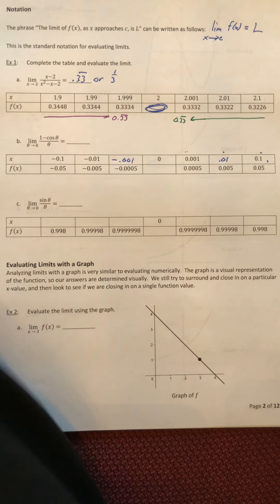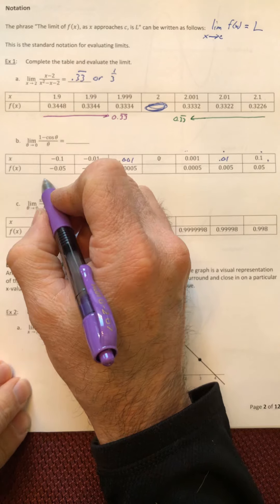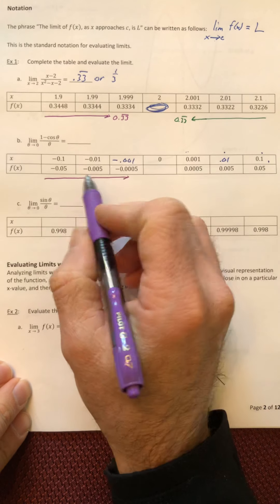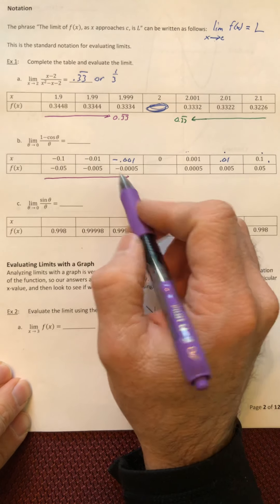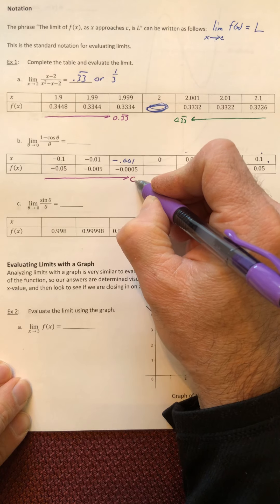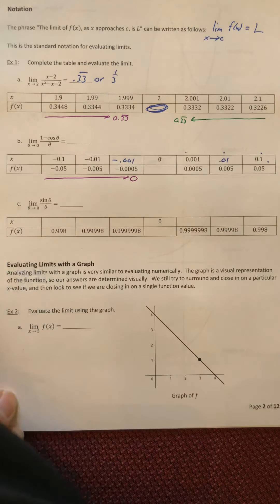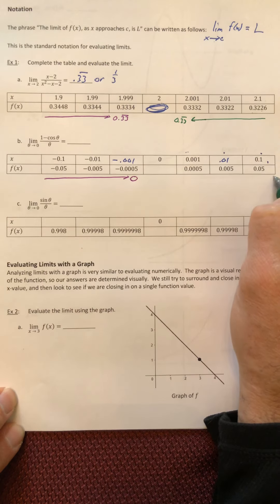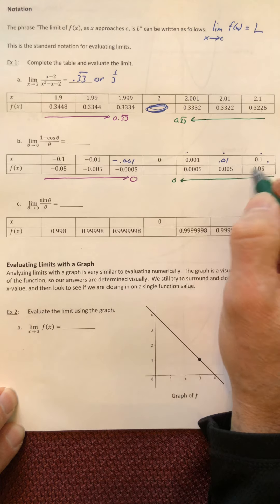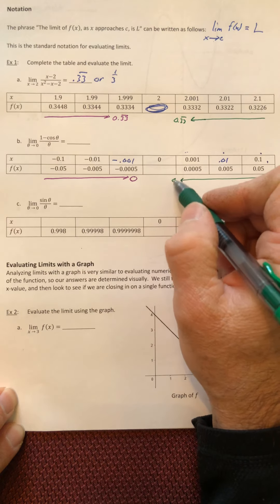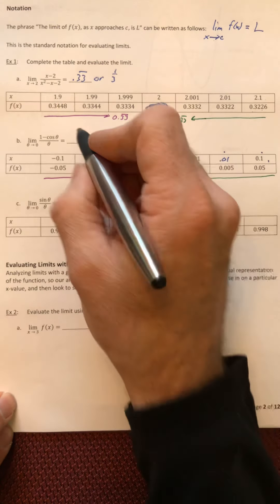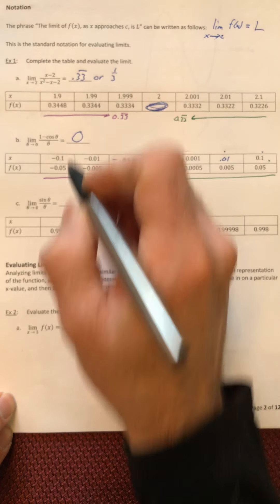So again, let's look at what the y values or the function values are doing. On this side, these numbers are working their way down and they keep getting smaller and smaller and smaller to zero. And on this side, on the right side, these numbers are working their way down, smaller and smaller, to zero. So on both sides they're approaching zero, so your answer is zero.